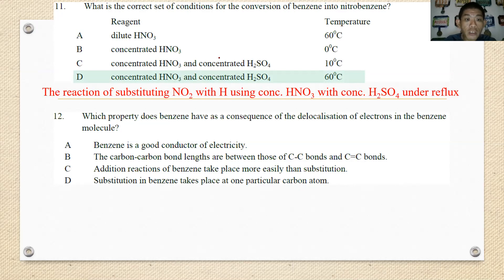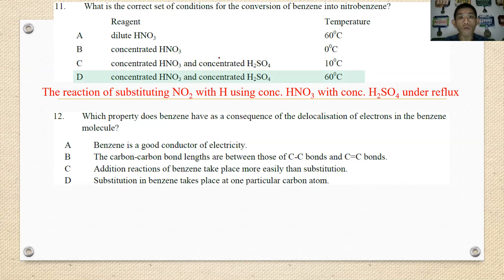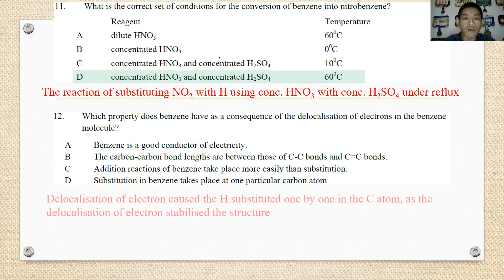Number twelve: which property does benzene have as a consequence of delocalized electrons inside the benzene ring? Because of the delocalized electrons circulating around the benzene ring, it stabilizes the ring. So instead of undergoing addition reactions, it is more preferable to undergo substitution reactions. The best answer is D.